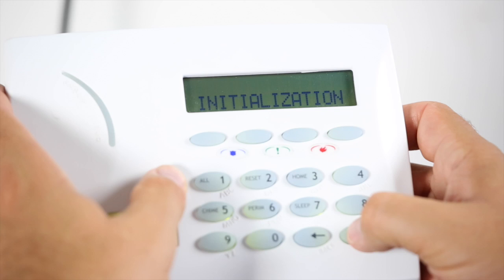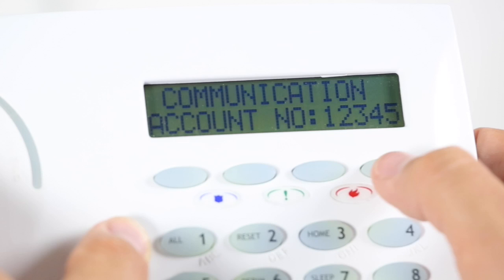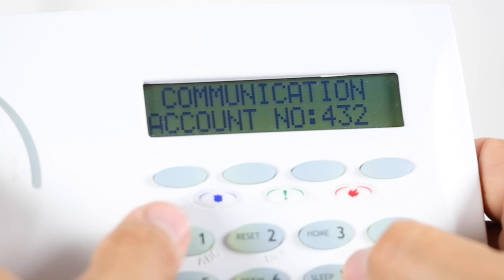Navigate using command to communication. Press the top row select key to enter into communication. The first option is account number. The account number that is programmed into the Cellcom SL will be what is communicated to the receiver.